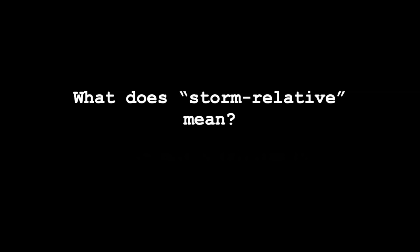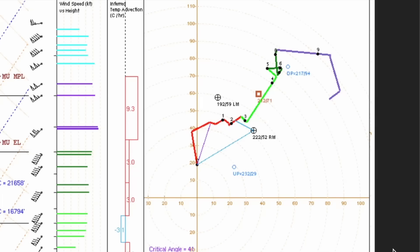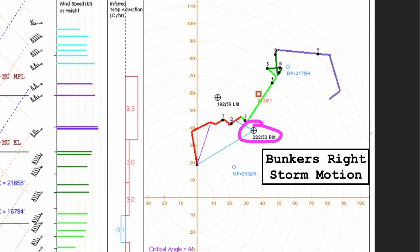The type of supercell that might dominate a given environment depends on the mid and upper level storm relative winds. These modulate how precipitation is vented relative to the location of the updraft — whether precipitation is pushed far away from the updraft or remains fairly near it. Storm relative winds are simply the winds with the storm motion factored out — the wind that the storm is feeling from its own perspective. To find that on the hodograph, instead of drawing our wind vector from the origin, we draw it from the storm motion to the point of interest. The storm motion is given by the Bunkers right-moving supercell storm motion bullseye.